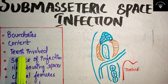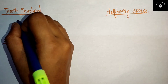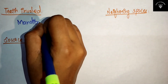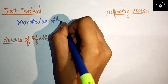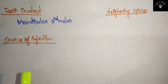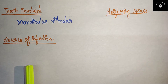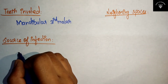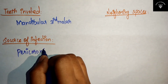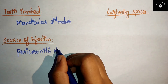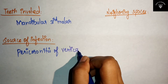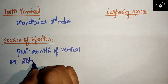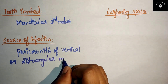Now let's move on to the teeth involved in the submasseteric space infection. The teeth involved will be your mandibular third molar. Coming to the source of infection — the source of infection is pericoronitis, specifically pericoronitis of vertical or distoangular mandibular third molars.